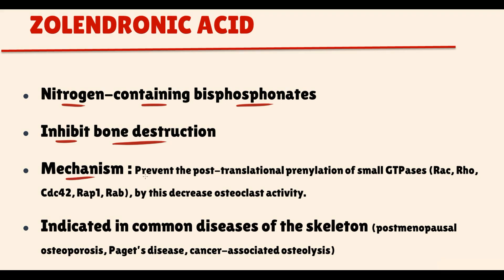Zoledronic acid prevents the post-translational prenylation of small GTPases, and by this it decreases osteoclast activity. To explain the mechanism of action of zoledronic acid, we have to know how the activation of GTPases occurs and why it is so important for osteoclasts.